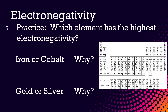Which element has the highest electronegativity: iron or cobalt? Why do you think that? Gold or silver? Why? Iron is right here and cobalt is right next to it, so cobalt would have the higher electronegativity because the electronegativity trend increases from left to right across a period. Gold or silver? Gold is here and silver is right above it. Silver would have the higher electronegativity because electronegativity increases as you go up the group.